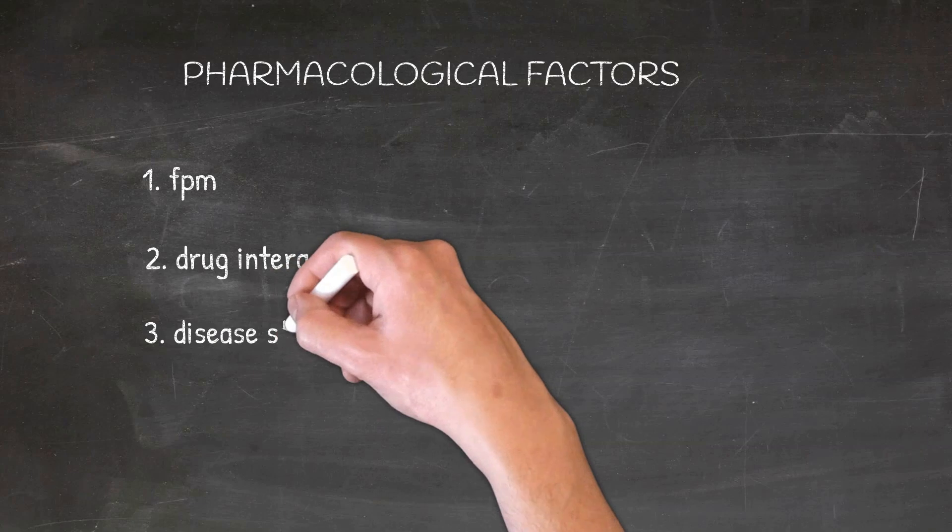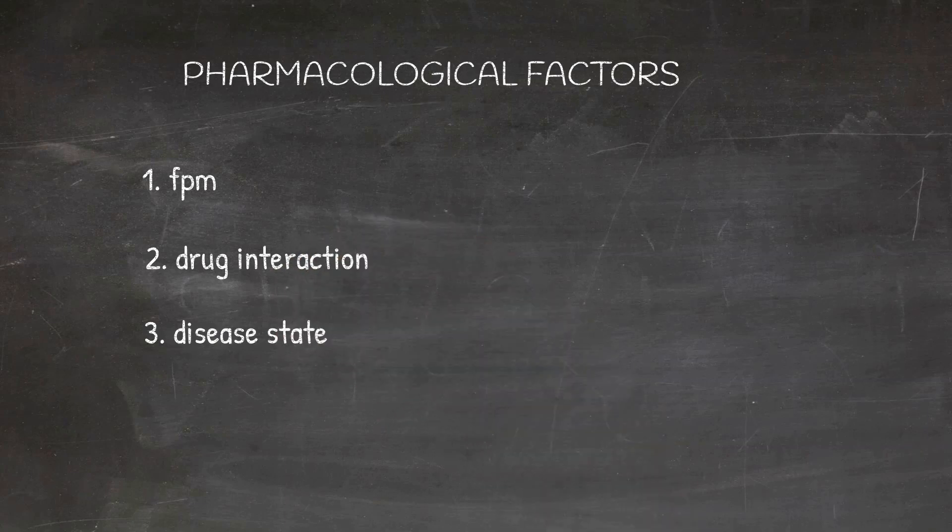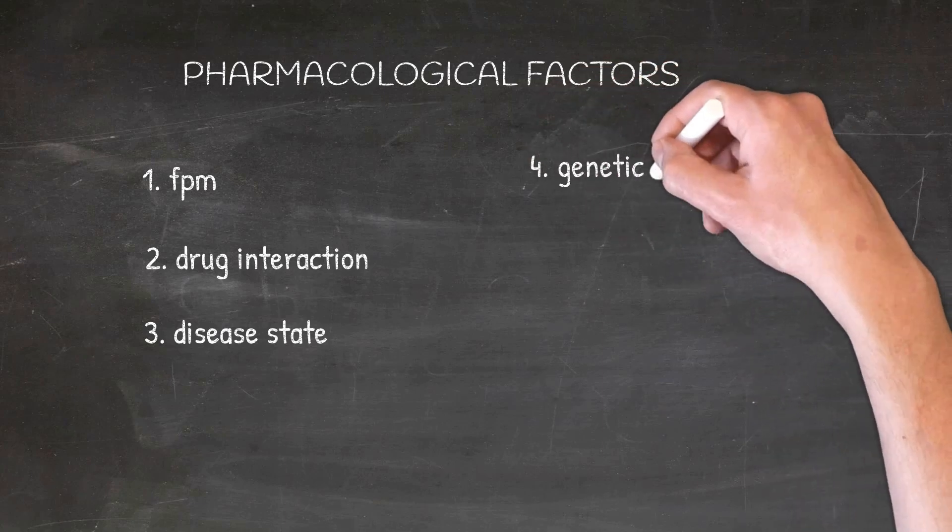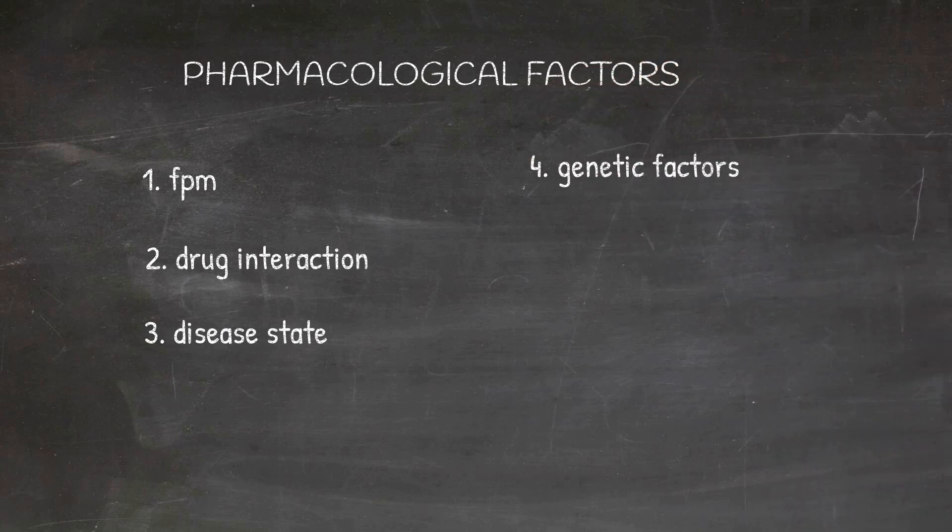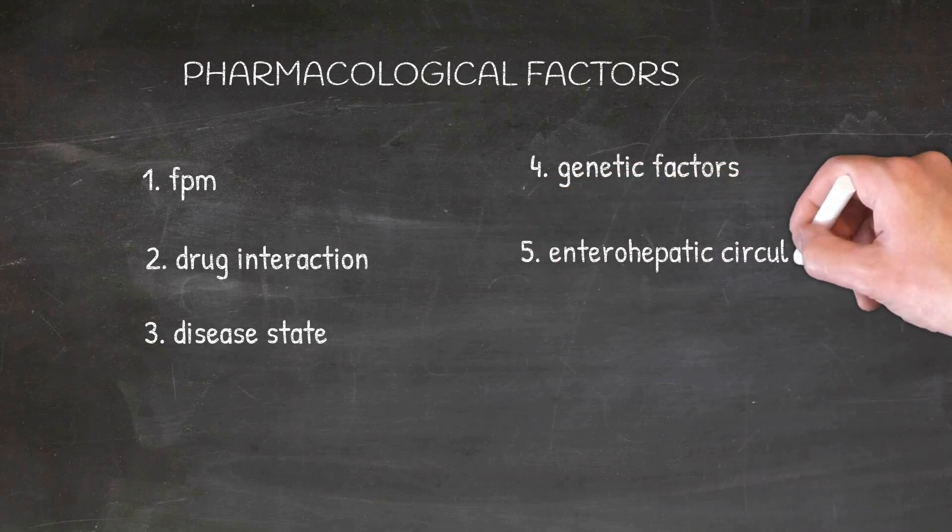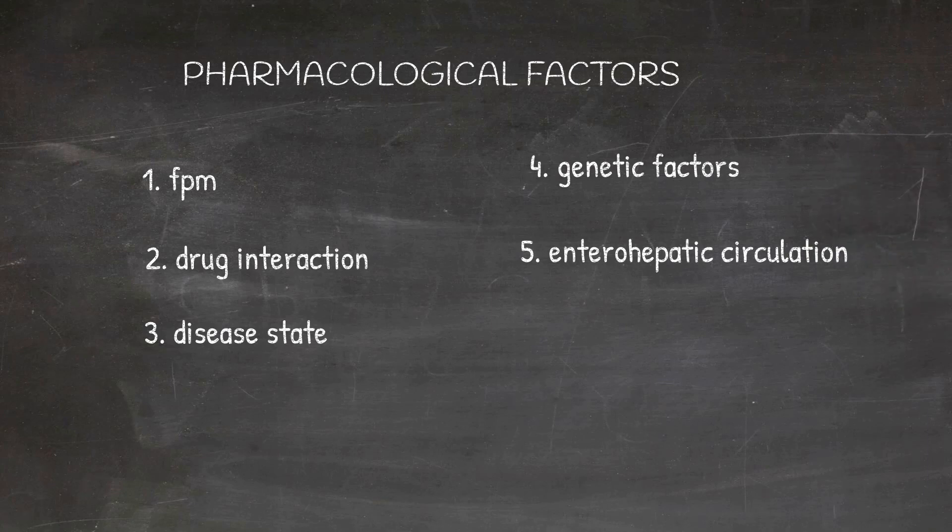Now in cases of certain disease states, like say for example you have a malabsorption syndrome or a disease of gut, the drug absorption may vary and thus affect the bioavailability. Genetic factors. Genetic polymorphism of the drug metabolizing enzyme can affect the bioavailability of the drug. And lastly, the enterohepatic circulation. Drugs that undergo enterohepatic circulation have a larger bioavailability.